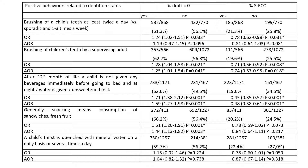Multivariate logistic regression confirmed a reduction in the risk of caries in children whose teeth are brushed twice a day by an adult, who didn't get sweet drinks before bedtime in the second year of life, and who receive sandwiches and fruit as snacks.